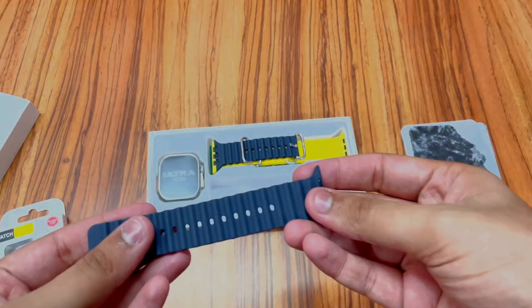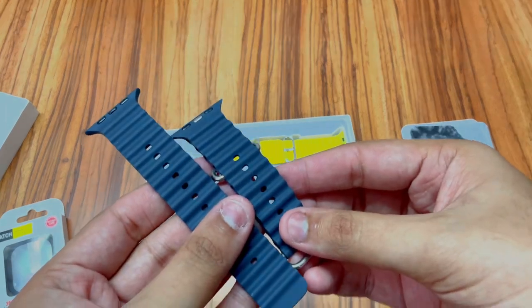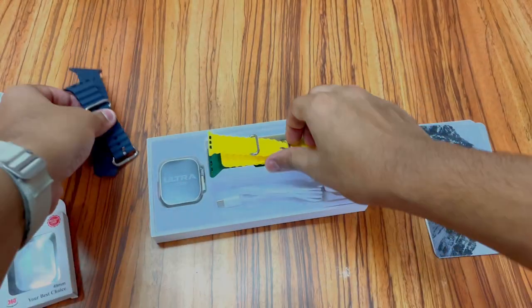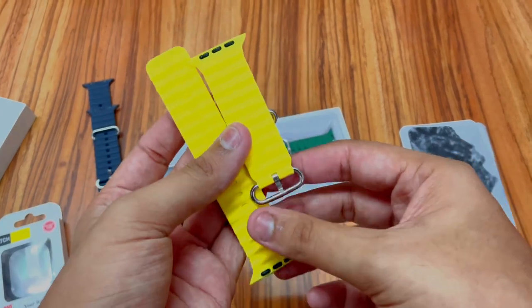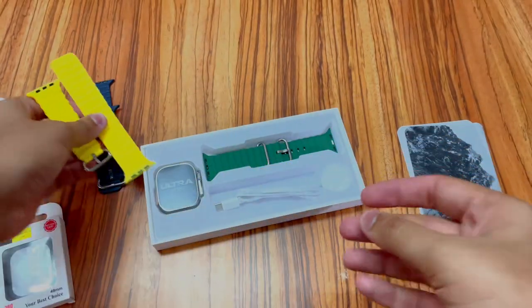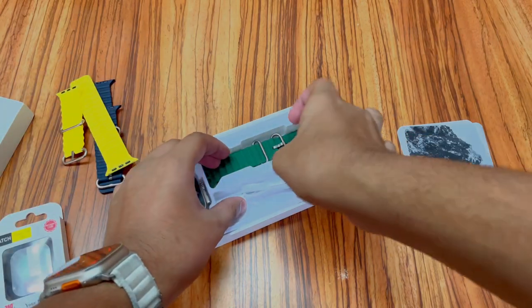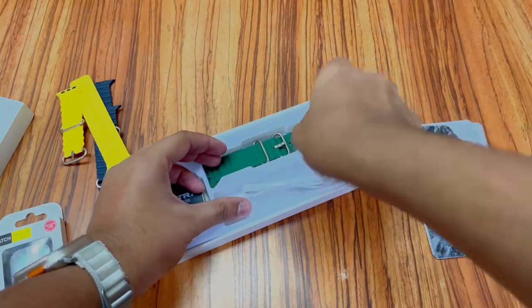I have bought three straps as well to give to you guys. We have the ocean blue strap, then we have the ocean yellow strap - the yellow one is also my favorite, I love it. And besides this, I've also bought the ocean green strap. So these are the three straps I have bought for you guys.